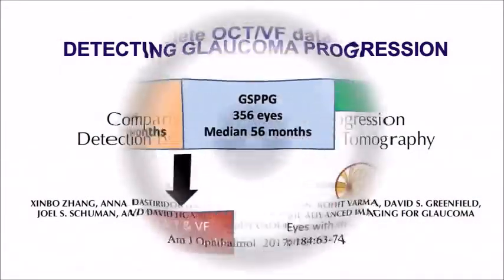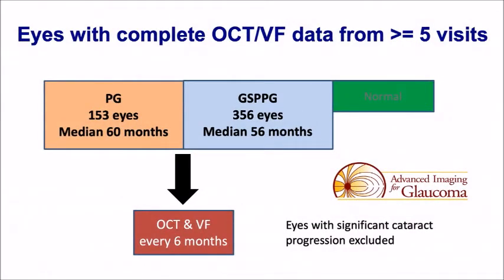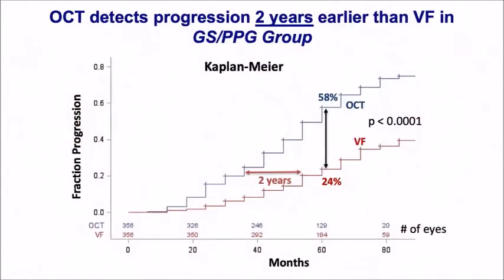If you're looking at progression itself, this is in parametric glaucoma, as well as glaucoma suspects and preparametric. What you see is that in the suspect and preparametric group, the change in OCT preceded the change in the visual field by about two years.